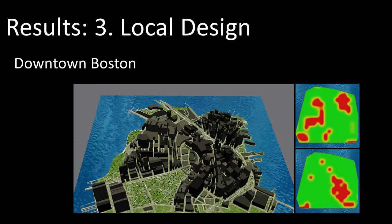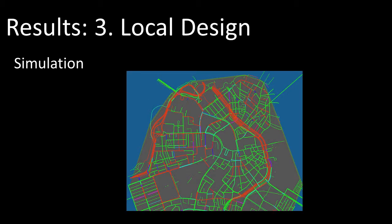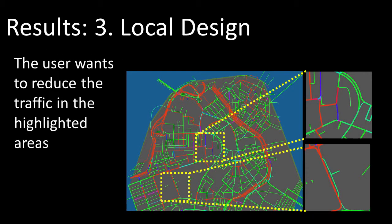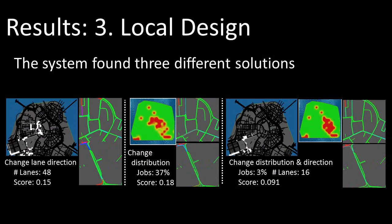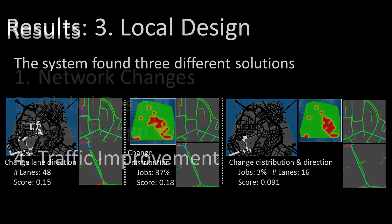Locally constrained changes can also be made. Here, the user wants to reduce traffic in the highlighted areas of downtown Boston. The system finds three solutions with varying amounts of network changes.